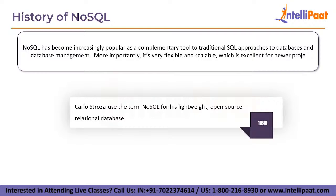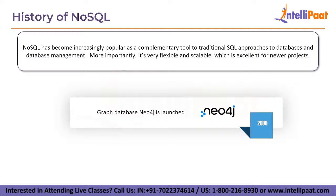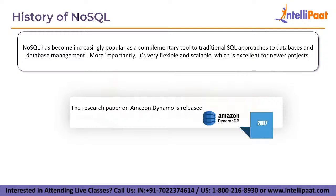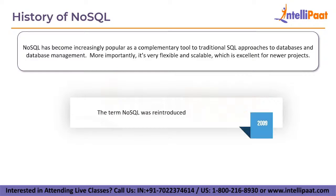It was first in the year 1998 that Carlos Strozzi used the term NoSQL for his lightweight open-source relational database. In the year 2000, graph database Neo4j was launched. In the year 2004, Google Bigtable was launched. In the year 2005, CouchDB was launched. In the year 2007, the research paper on Amazon Dynamo was released. In the year 2008, Facebook open-sourced the Cassandra project. Then in 2009, the term NoSQL was reintroduced.